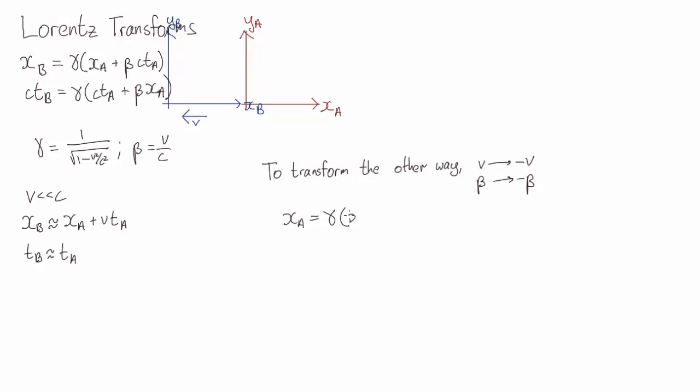And again, if we look at the low velocity limit, we get the Galilean transformations, this time going in the other direction.